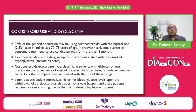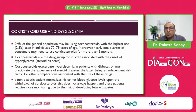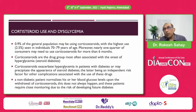Coming to the role of steroids in causing dysglycemia: if you look at the overall use of steroids, 0.9% of the general population may be using corticosteroids for some reason or another. The highest usage is in older ages, and nearly one quarter of those who consume steroids do so for more than six months.